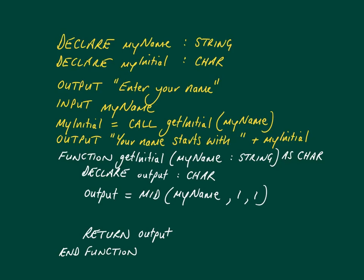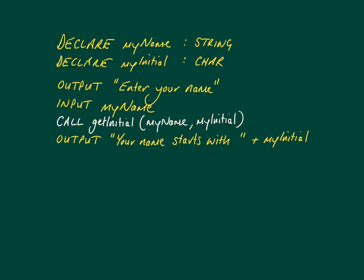Now we've described functions, let's look at how the exact same program looks if we use a procedure. We've got the same main program with the same two variables and we've asked the user to enter their name. But instead of assigning the value returned by the function to 'my initial', this time we're calling 'get initial' and passing in two parameters - not just one. We're passing in 'my name' and 'my initial'. After that, we have the same output - 'your name starts with my initial'. This procedure takes in two parameters but returns none.